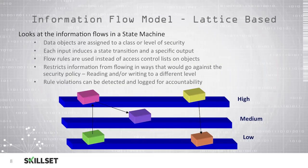We also have the information flow model, which is based on the lattice model. This model focuses on the way that information flows in a state machine. Obviously, our data objects are assigned a class or level of security as in the state machine model, and every time there's an input into the system, there's a state transition and there's a specific output.